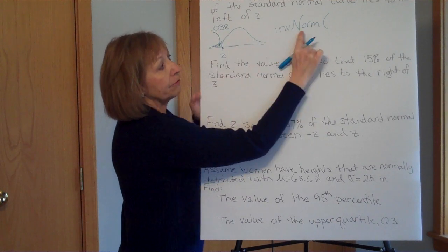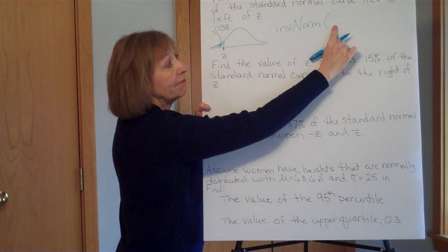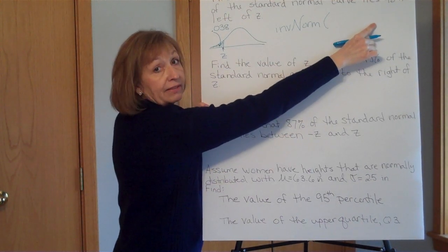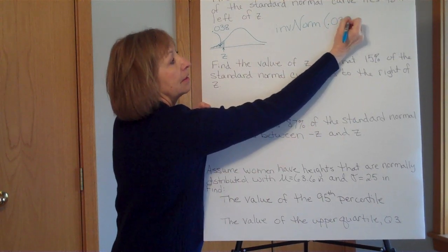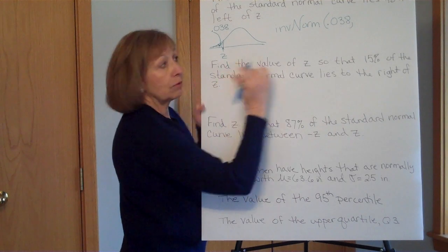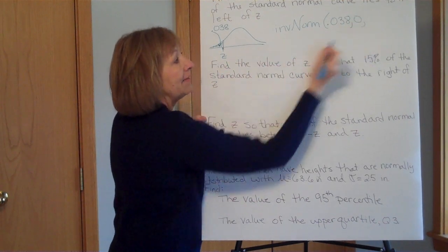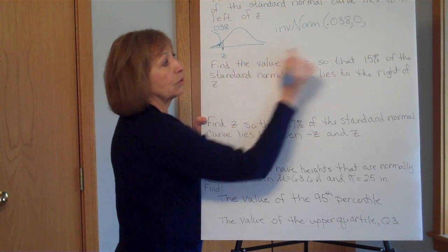Area shaded to the left. Well, area to the left is exactly what this question actually gave. So when I do the inverse norm, it's area to the left, comma mean, comma standard deviation. So I'll have the 0.038, the mean of the z-scores is 0, and the standard deviation of the z-scores is 1.